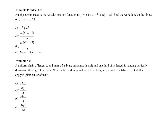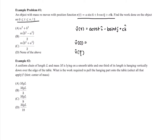Now let's get into some practice problems. This first problem applies the work-kinetic energy theorem. We have a vector function for position, so I'm going to differentiate it once to get the velocity: a cosine(t) i minus b sine(t) j plus ck. Then I'll find the velocity vectors at t equals 0 and t equals pi over 2. At t equals 0, the cosine of 0 is 1, so that's ai plus 0j plus ck.